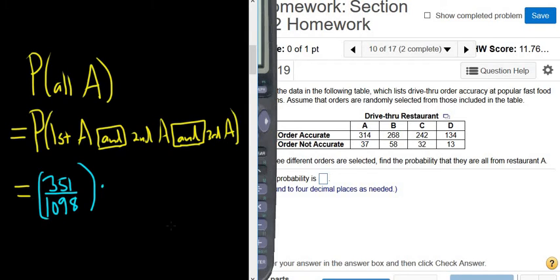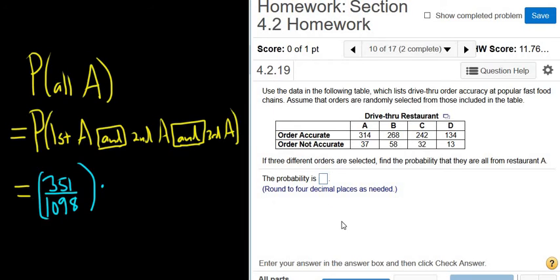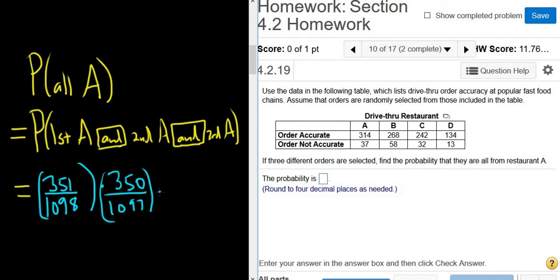And the second one has to be from restaurant A. But notice it doesn't say anything about with or without replacement. So it's always without. So we have lost an order from restaurant A. So that becomes 350. And this becomes 1097. And so it goes down again. So it's 349, 1096.